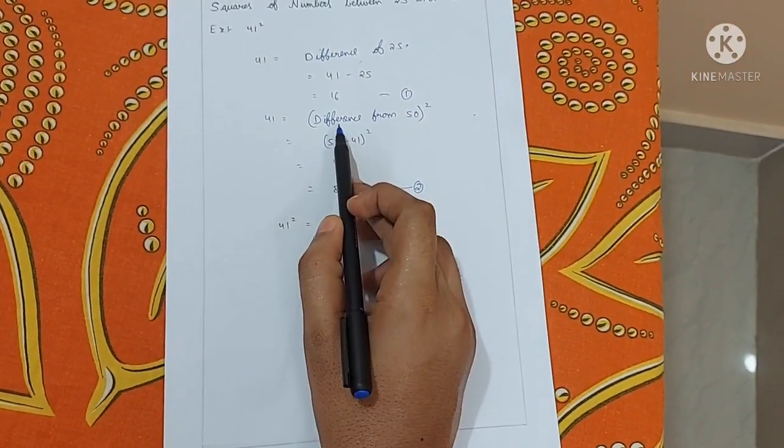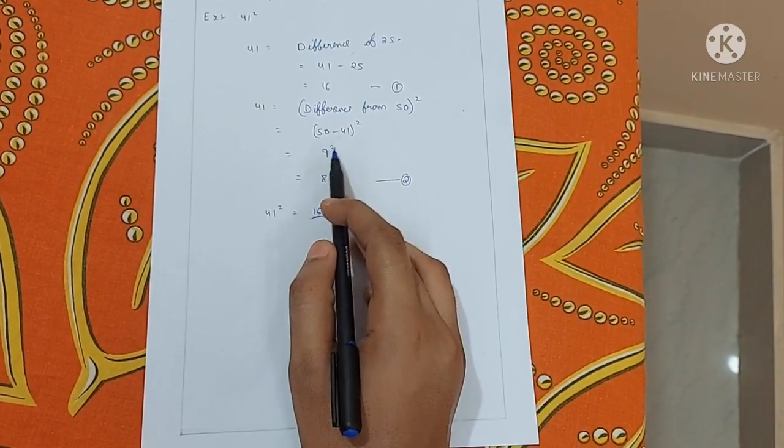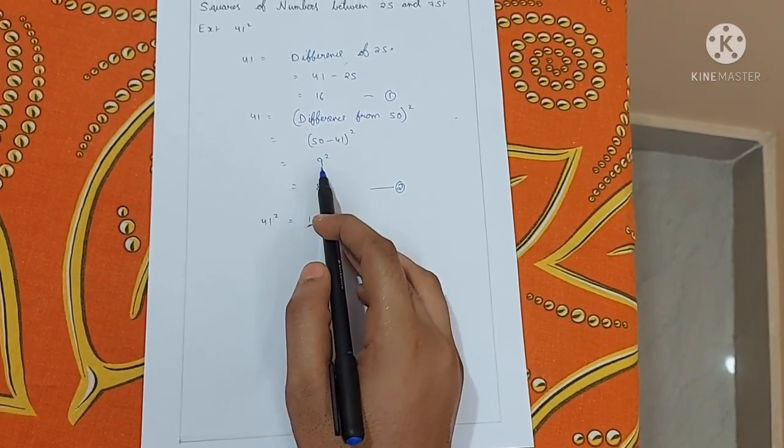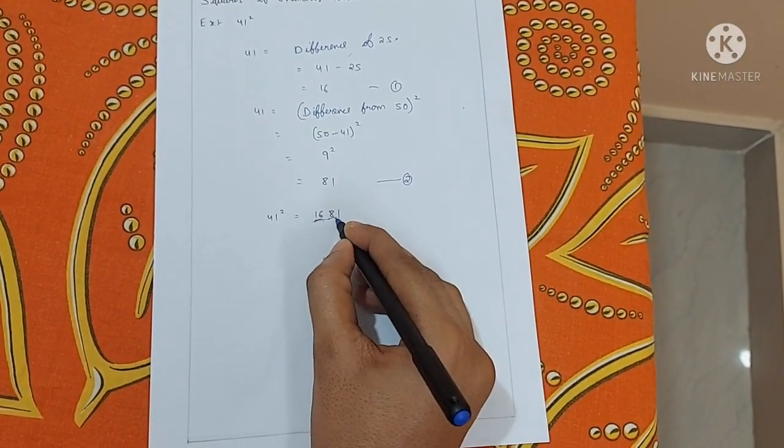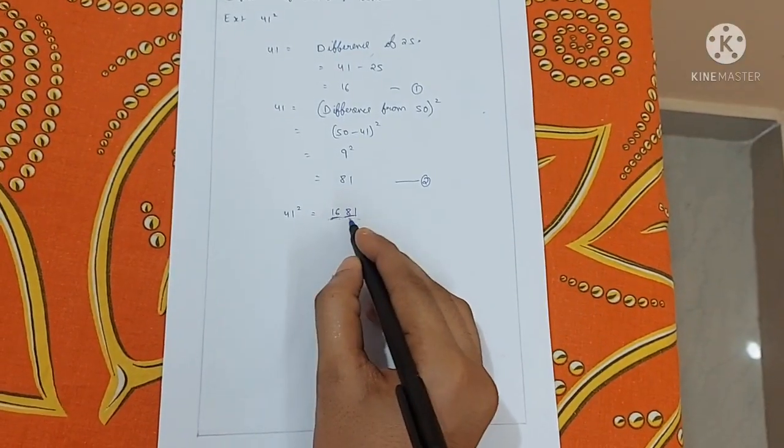The second step is take the difference from 50. 50 minus 41 equals 9. Now square the number. 9 square equals 81. Take this as the second number. Now this is the required answer.